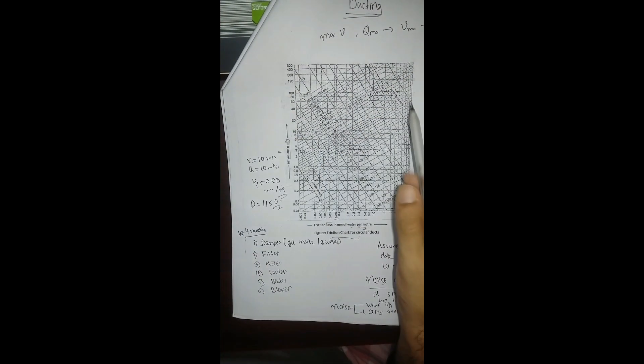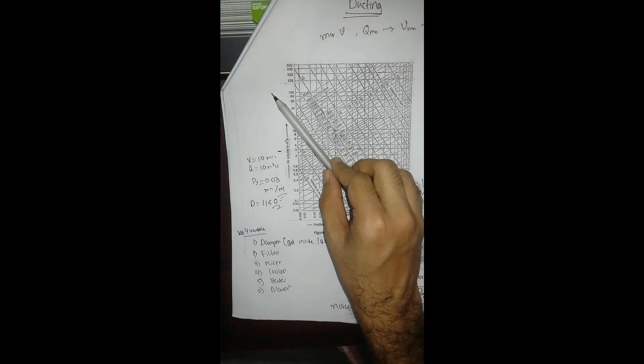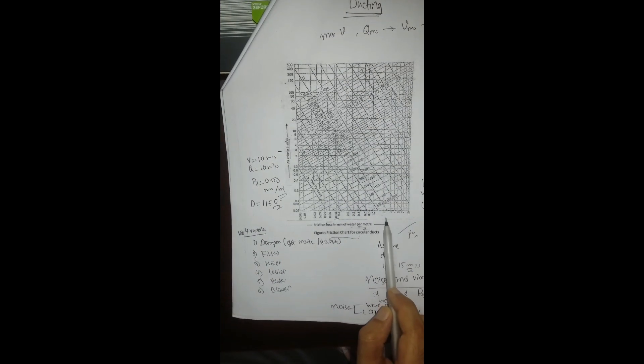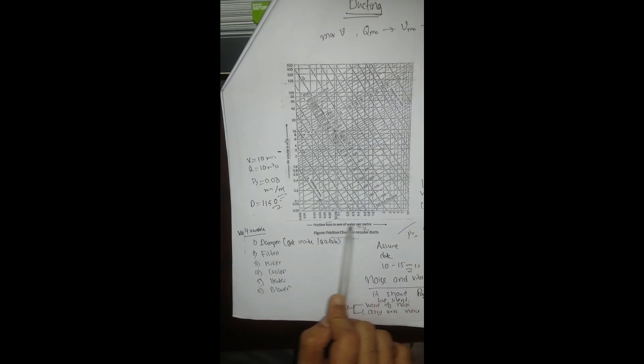Now for the conceptual part: if we increase the diameter of the duct, and the volume flow rate also increases, then the friction will decrease and the velocity will also decrease.